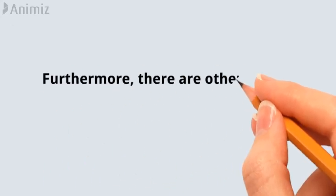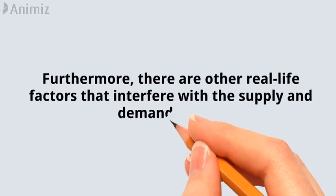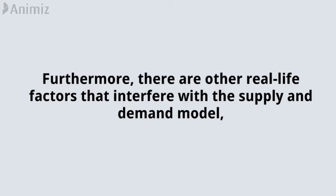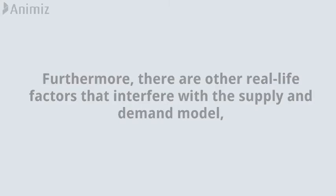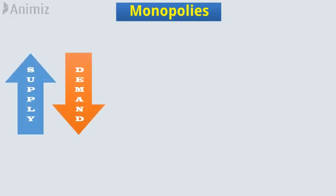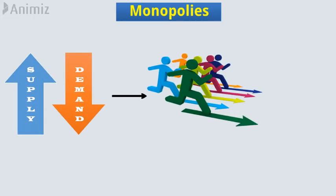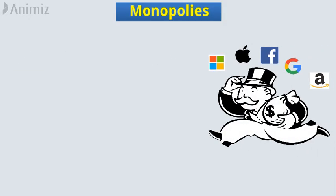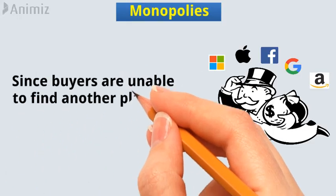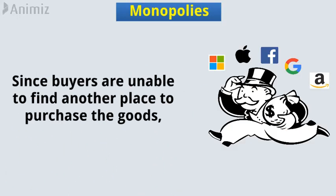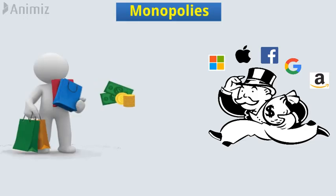Furthermore, there are other real-life factors that interfere with the supply and demand model, such as monopolies. The supply and demand model assumes perfect competition, which rarely occurs. In some markets, we see a single powerful producer of goods, and since buyers are unable to find another place to purchase the goods, they are forced to accept whatever price the seller decides to set.